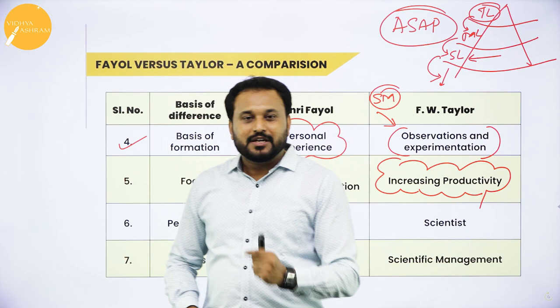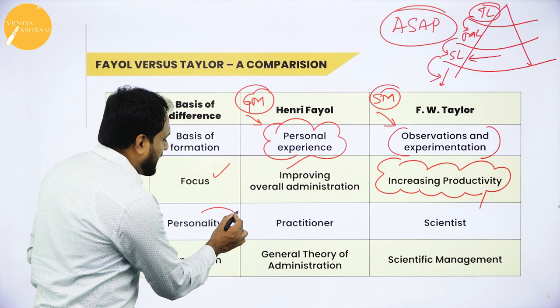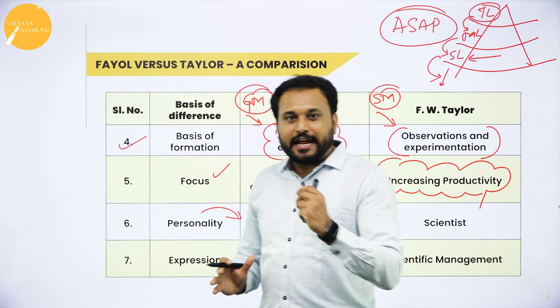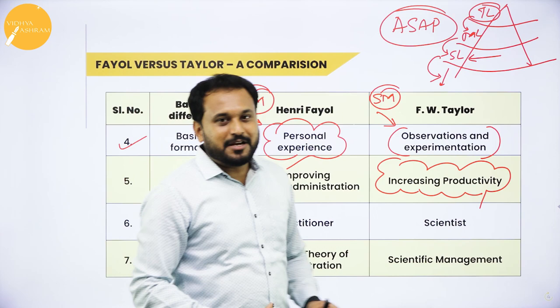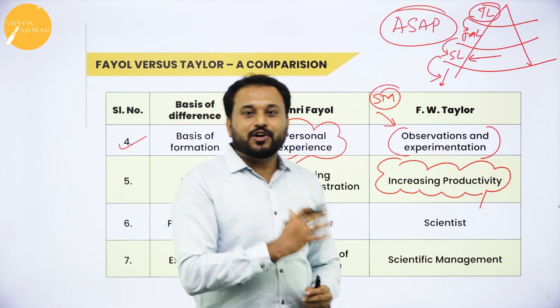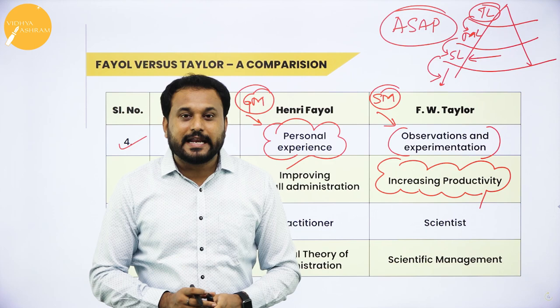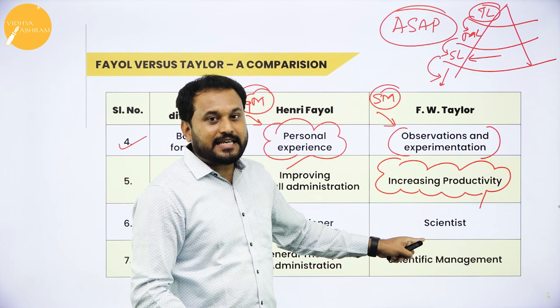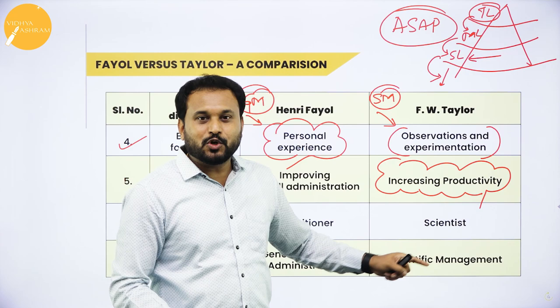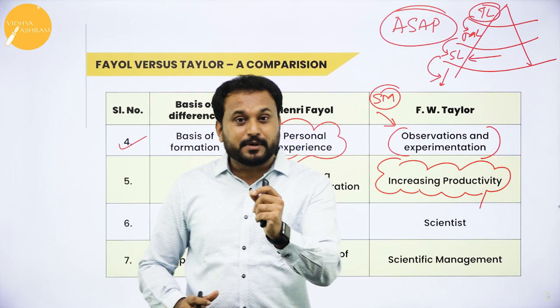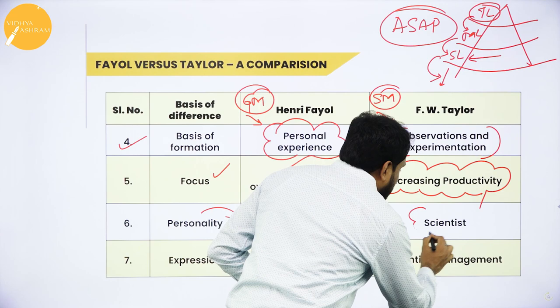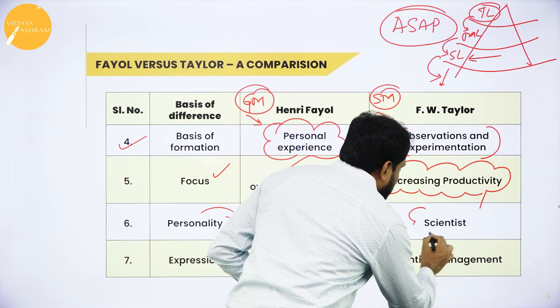The sixth basis is personality. Henry Fayol is a practitioner — he only practices. Sometimes it is good, sometimes bad, but we cannot always know what exactly went wrong. F.W. Taylor is a scientist — through scientific management he knows exactly where a mistake was made and how to rectify it. That is why Taylor is a scientist and also the father of industrial engineering.